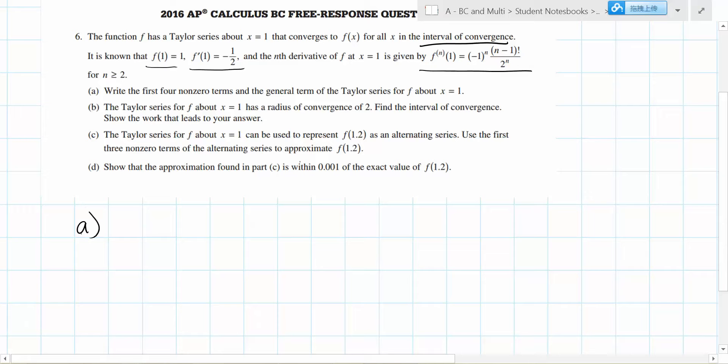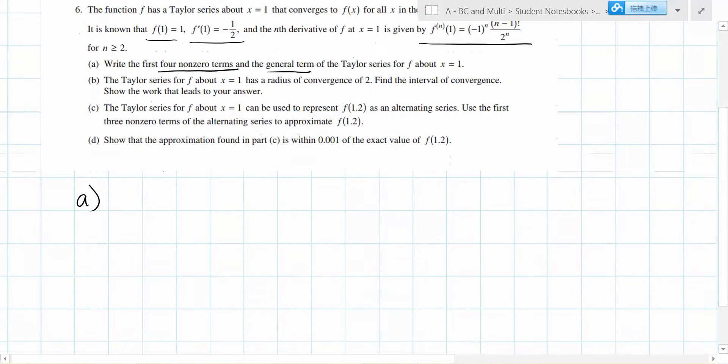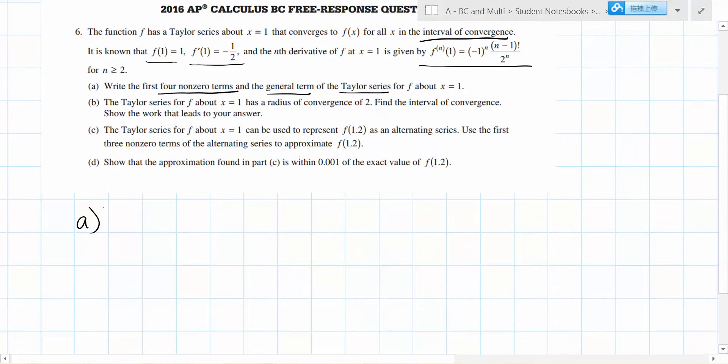Part a asks us to write the first four non-zero terms and general term of the Taylor series for f about x equals 1. To write the Taylor series, we need to find f prime, f double prime, and f triple prime.